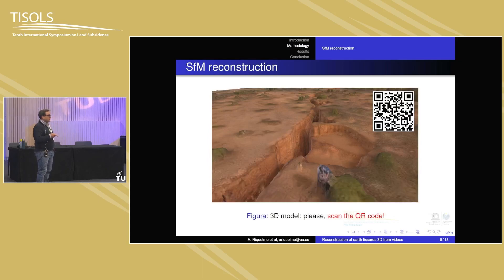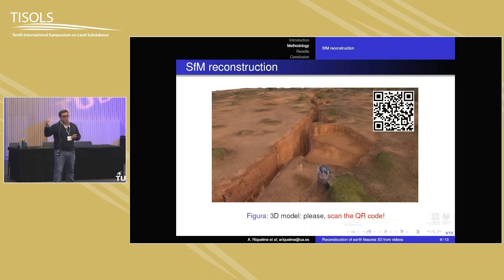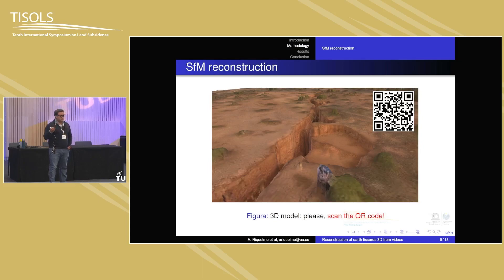Now please take your phone and watch the result. Zoom in, zoom out with two fingers, move right, left, and so on. The most interesting thing for us is that with this model you can measure things, extract cross sections — as many as you want — and also generate a digital elevation model with errors. The reconstruction error was close to one centimeter, but because we only used three ground control points. Therefore, you can observe the shape, geometry, and geomorphology of the earth fissure, only using a video from YouTube.